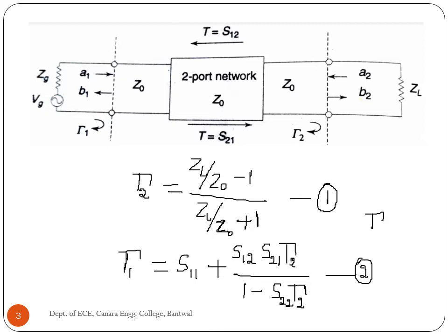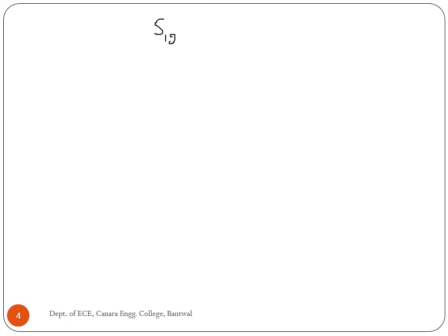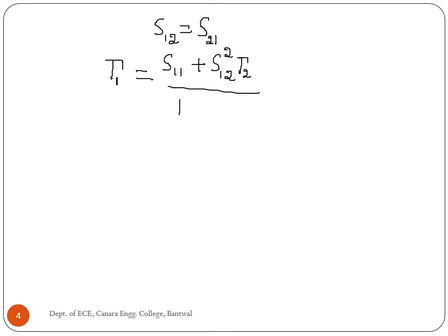The reflection coefficient at port 2, divided by (1 − S22 · reflection coefficient at port 2). Therefore, for a mismatched load, the input reflection coefficient at port 1 is not equal to S11. The input reflection coefficient at port 1 equals S11 plus S12 squared times the reflection coefficient at port 2, divided by (1 − S22 multiplied by the reflection coefficient at port 2).